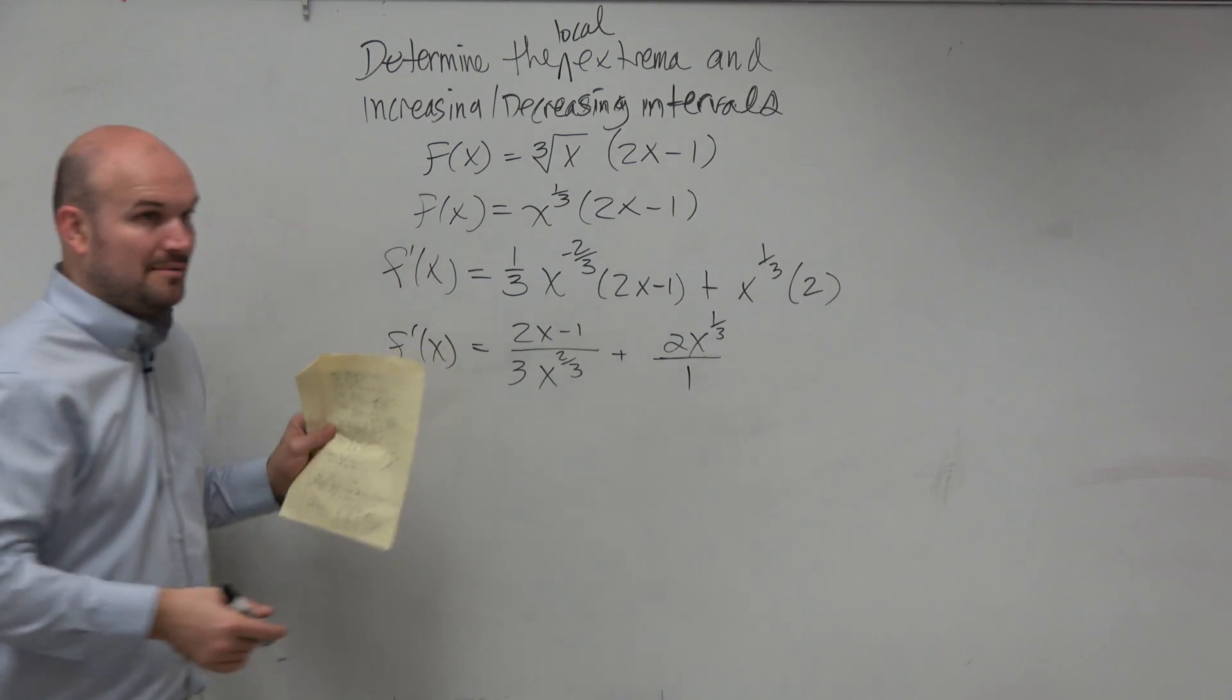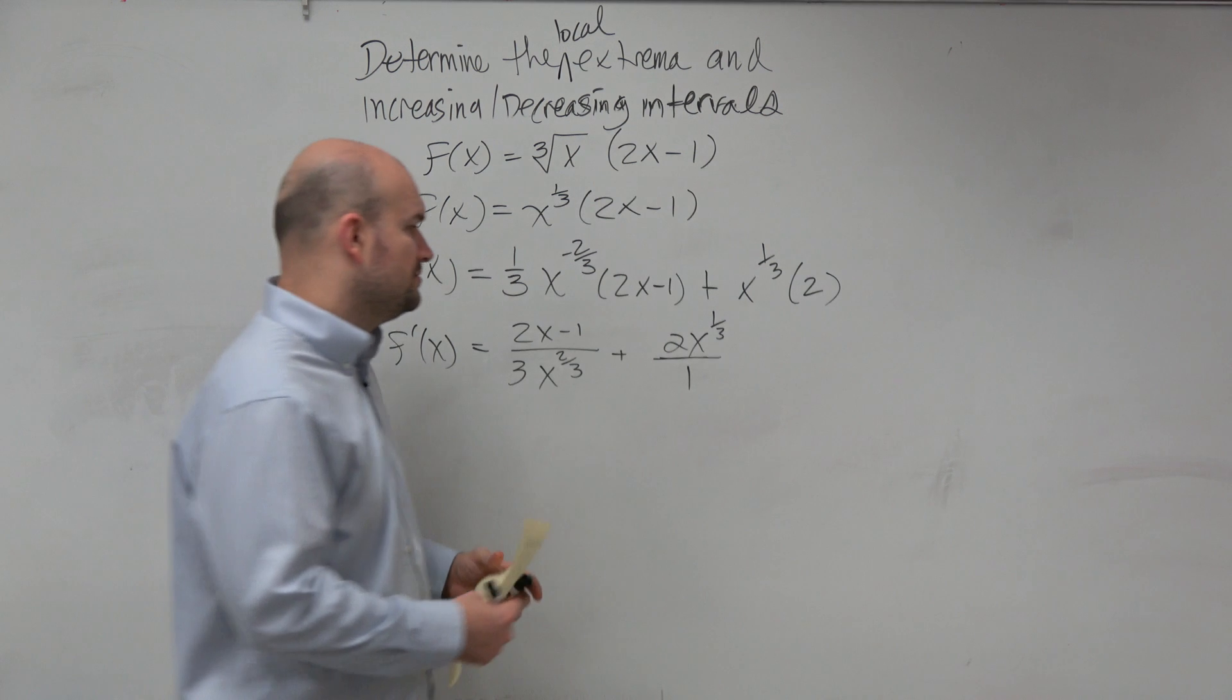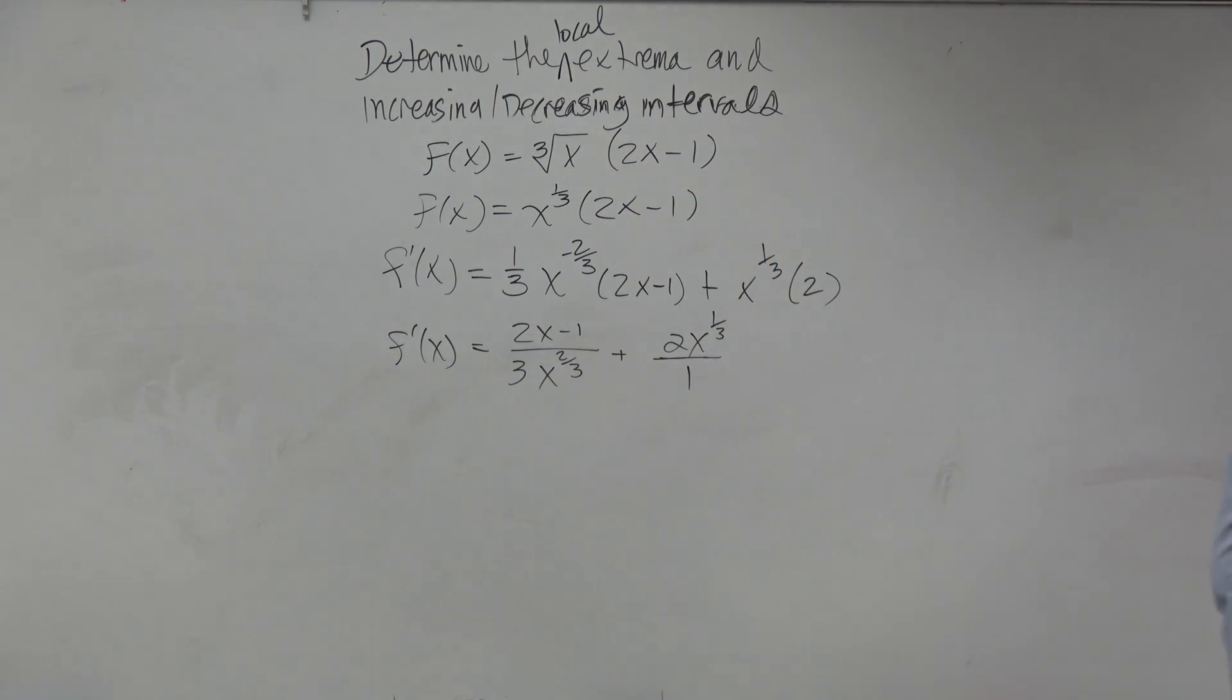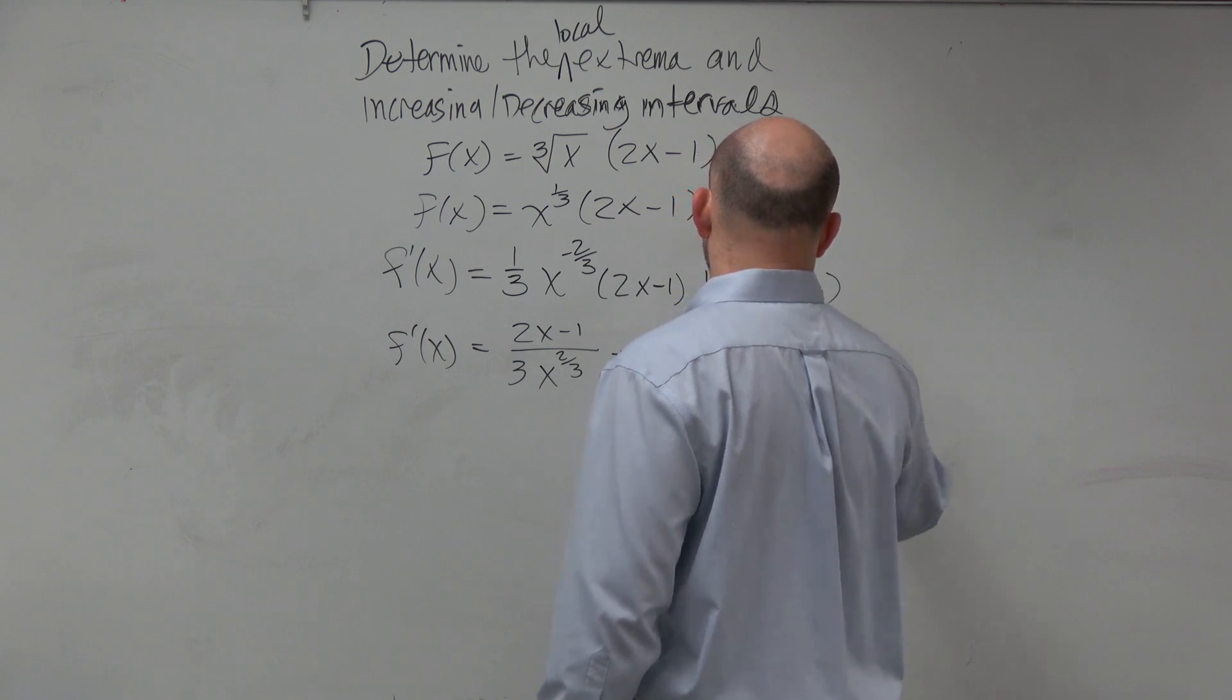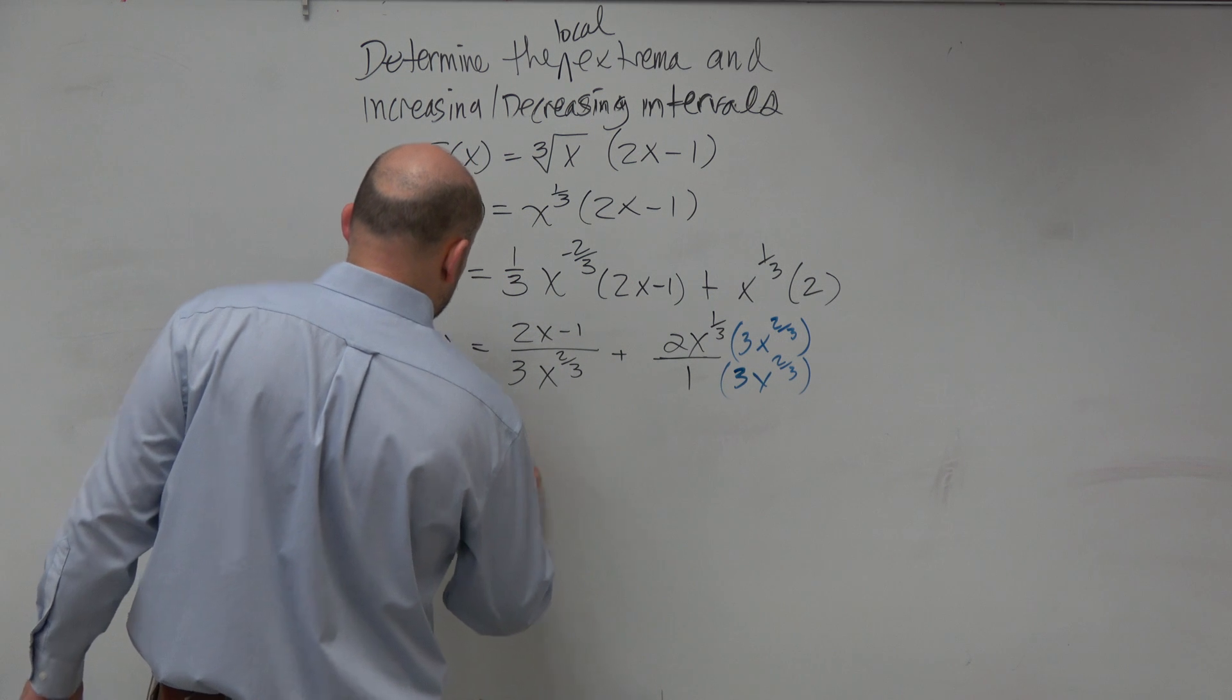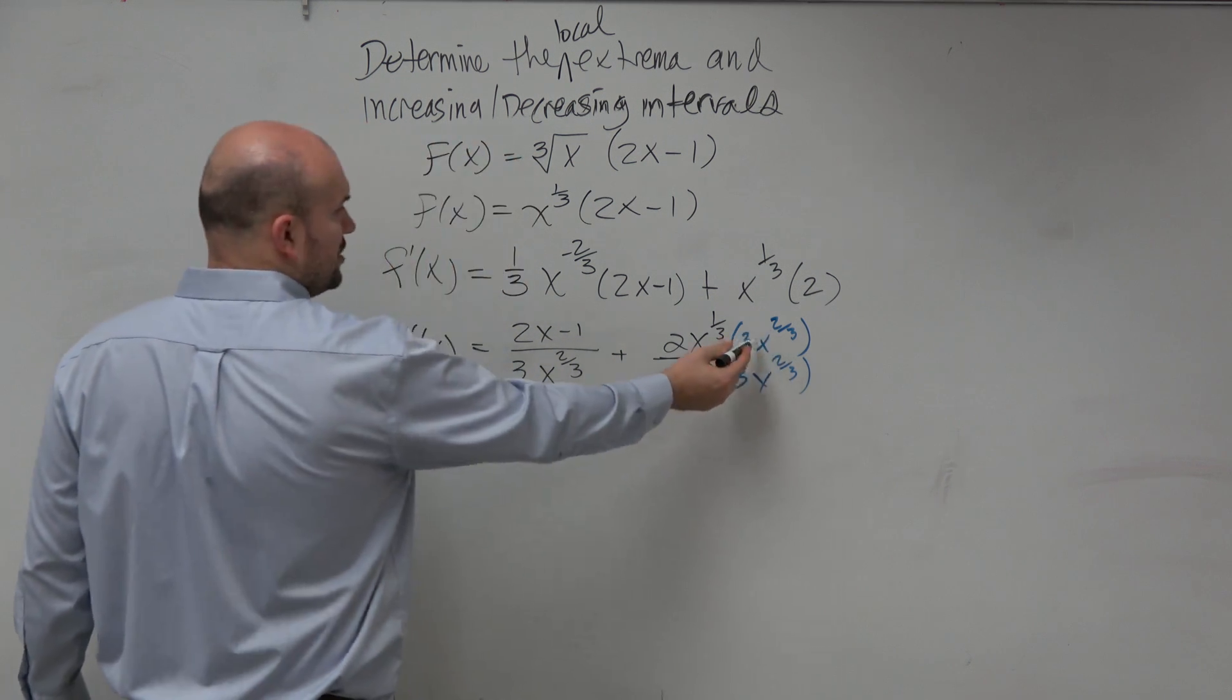But I want to go and get common denominators, right? So my common denominator is 3x^(2/3). So therefore, I'll multiply 3x^(2/3). And I obtain (2x - 1) plus...